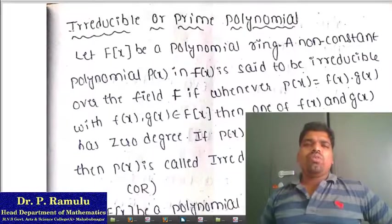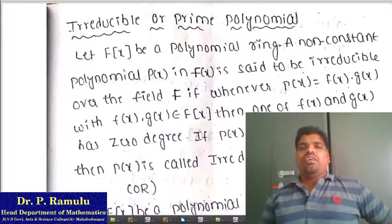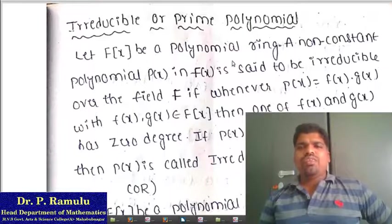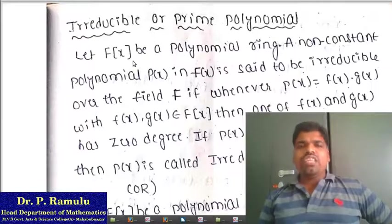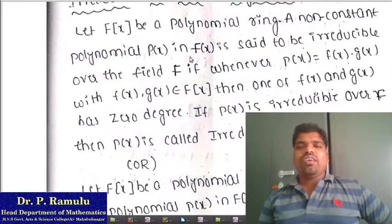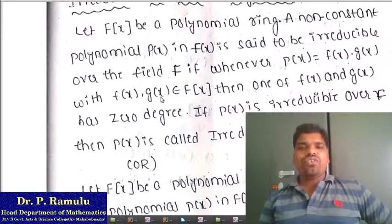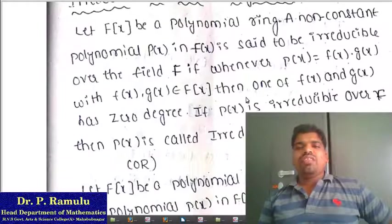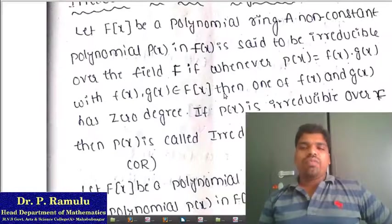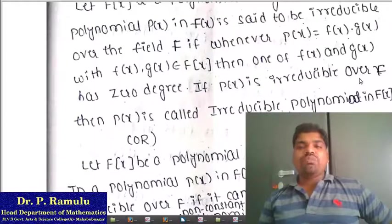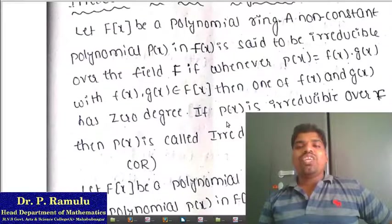What is an Irreducible Polynomial or Prime Polynomial? Let F[x] be a polynomial ring. A non-constant polynomial P(x) in F[x] is said to be irreducible over the field if whenever P(x) equals F(x) times G(x), with F(x) and G(x) belonging to F[x], then one of F(x) and G(x) has degree 0 — that means one of them is a constant polynomial.